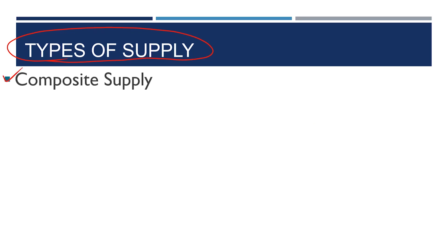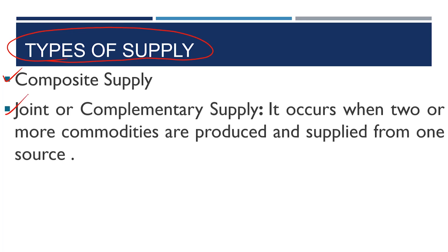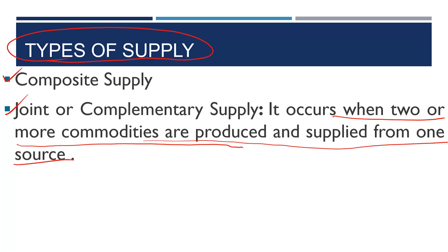Now, we'll be looking at types of supply. Number one is composite supply — that is when supply is being done in more than one particular unit or aggregation. Number two is joint or complementary supply. It occurs when two or more commodities are produced and supplied from one source.